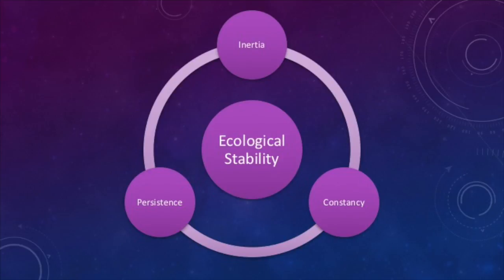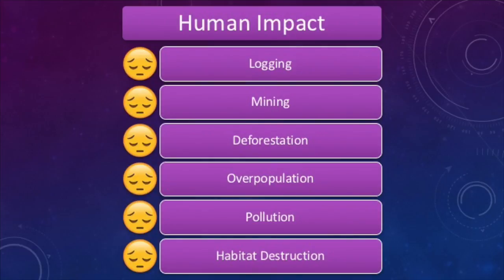Why do we care about any of this? Well, humans are selfish — we are in it for ourselves. As a result, we see what is called the precautionary principle, which states that when the results of an action show evidence of being detrimental to humans, we try our best to counteract it as well as prevent it. Which brings us to Chapter 22. We negatively impact biodiversity by logging, mining, deforestation, overpopulation, pollution, and habitat destruction.